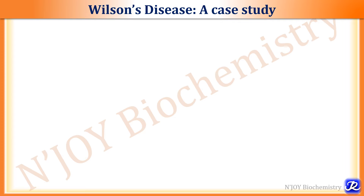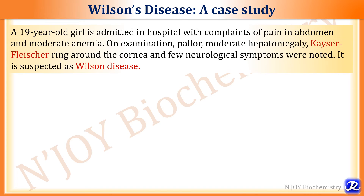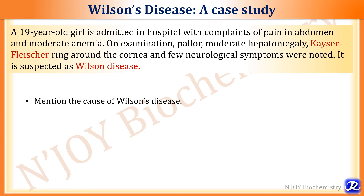Now let's see a case study of Wilson's disease. A 19-year-old girl is admitted to hospital with complaints of pain in abdomen and moderate anemia. On examination, pallor, moderate hepatosplenomegaly, Kayser-Fleischer ring around the cornea, and few neurological symptoms were noted. Wilson's disease is suspected and the diagnosis is already given in the case.